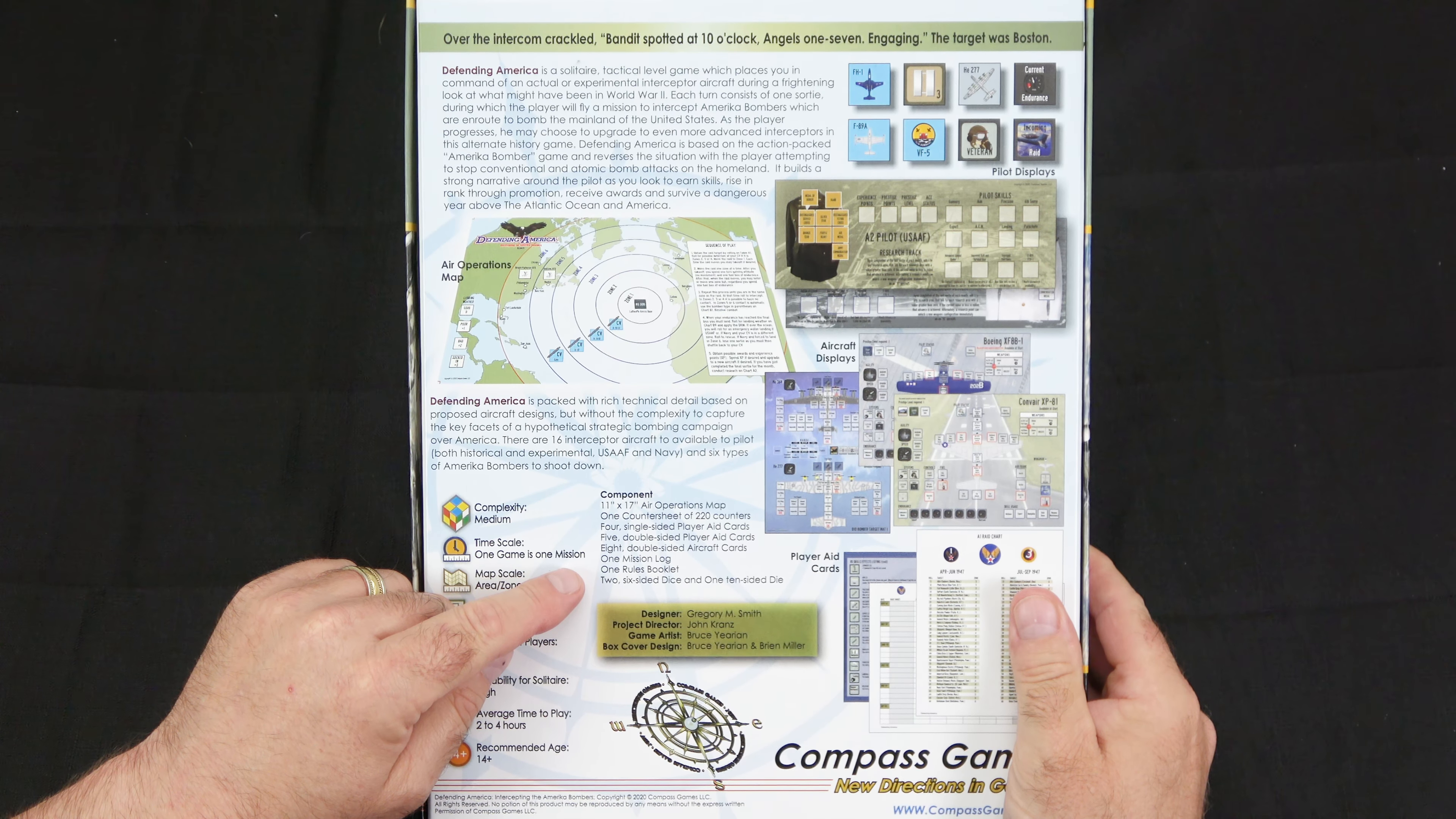And we'll take a look at some of the bombers that you'll be dealing with in the game. On the front, we have the TA-400 and the Arado E-555-1, which looks pretty badass. And we have the ME-262 and the GO-229. We have the ME-364 and the HE-277. On the back, we have the Fockel 300 and the Junkers 390.